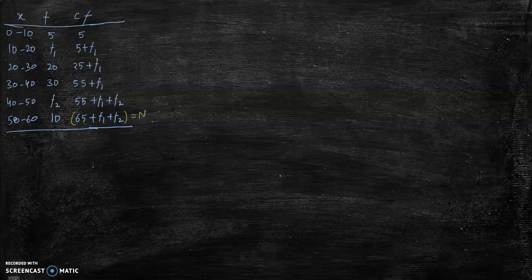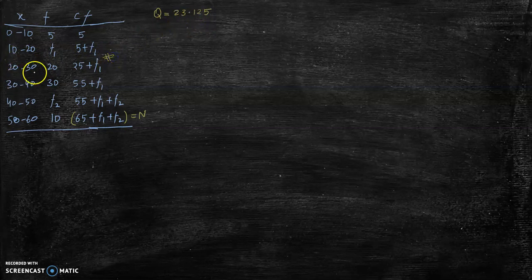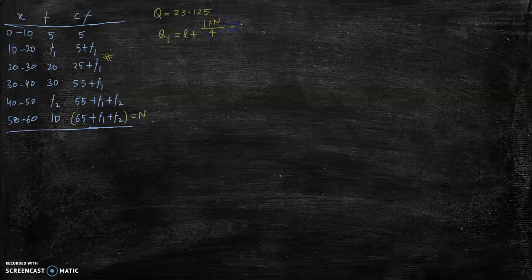Let's find the missing frequencies f1 and f2. The first quartile given is Q1 = 23.125. I need to identify which class this quartile falls in — it falls in the class 20–30, so 20–30 is my first quartile class. The formula for the first quartile is: Q1 = L + [(1·N/4) − cf] / f × i, where L is the lower limit, cf is the cumulative frequency of the previous class, f is the frequency of the quartile class, and i is the class interval.